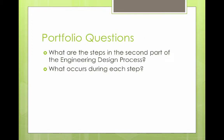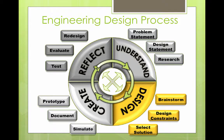Here are your portfolio questions for this video: What are the steps in the second part of the engineering design process and what occurs during each step? As a review, here's the graphic of the engineering design process. We're going to be focusing on the design piece, where we are basically making the plan for what it is we're designing — brainstorming different ideas, setting the constraints and requirements, and finally choosing the most promising solution.